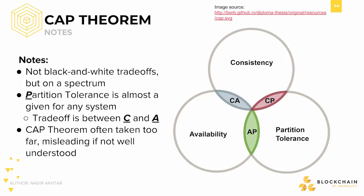In addition, almost every reasonable system will assume that partitions are going to occur, meaning that the choice of P as one of the two properties is given. For this reason, the CAP Theorem often reduces to a dilemma between consistency and availability. The choice is whether it is preferable for the system to return a false or outdated value, or to simply not return a value at all. On this choice hinges all the implications of the CAP Theorem.